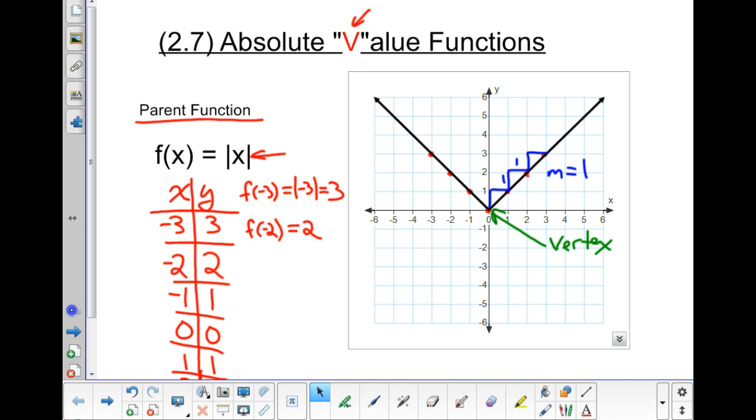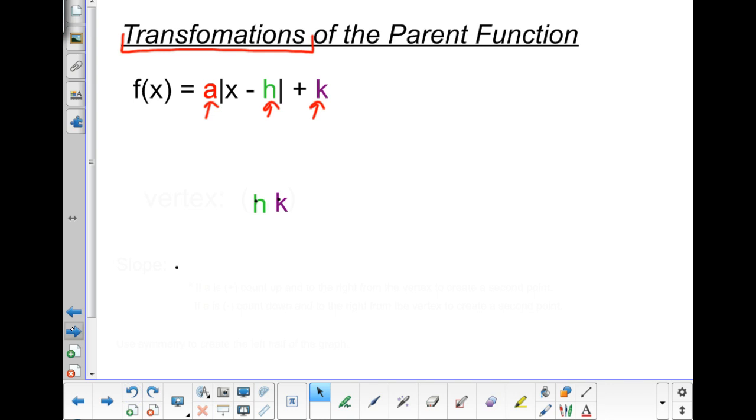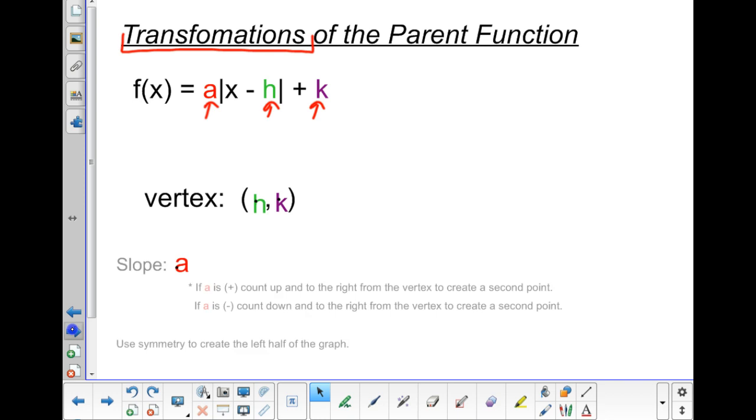Well, what if I wanted to change this V so that it becomes maybe a little bit more narrow, such as that, or maybe wider, such as this, right? How can I do that by just changing the equation? Well, that's where the value a comes in. This number that's in front of this a, or in front of the absolute value, this number a, he'll come out, and we're going to use him to create the slope of my line.